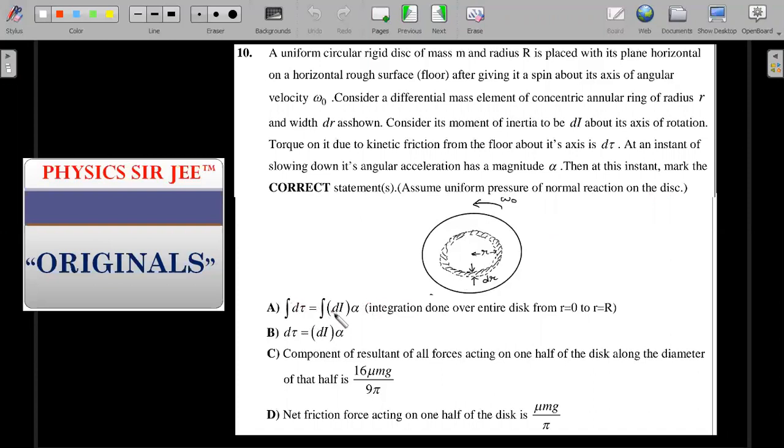The options are: integration of all d tau which are kinetic friction torques should equal integration of all dI's of these differential elements into alpha where integration is done over the entire disc. Then we remove the integral and write d tau equals dI into alpha—that forms option B. Component of resultant of all forces acting on one half of the disc along the diameter is option C. Option D is the net force of friction acting on one half of the disc. If you want to give it a try now, pause the video, try it for five to six minutes and do come back.